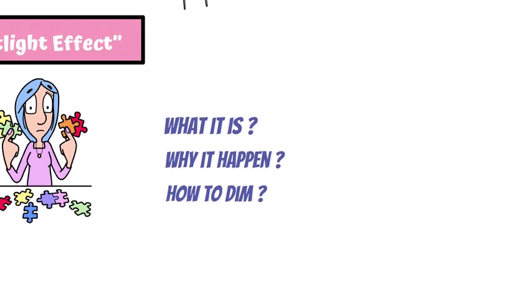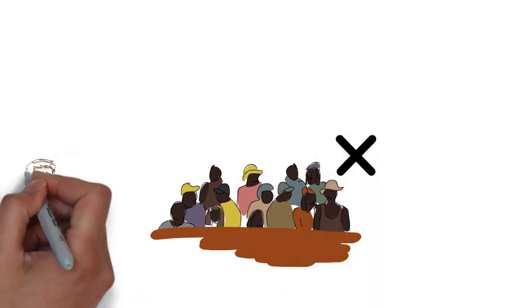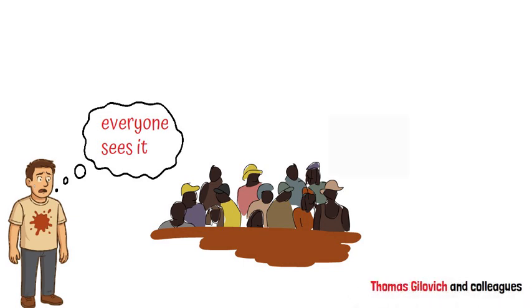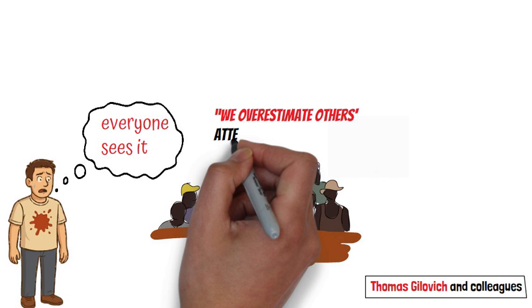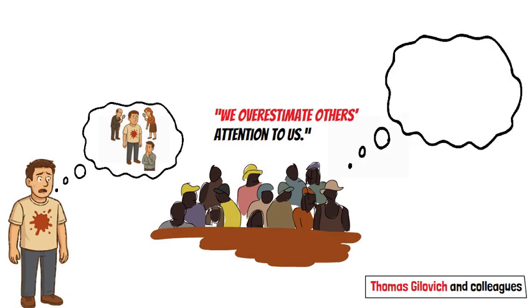Let's draw it out. The Spotlight Effect is our tendency to overestimate how much other people notice and care about our appearance, actions, or slip-ups. Coined by psychologists Thomas Gilovich and colleagues, it's rooted in egocentrism. We anchor on our own perspective, assuming others are as fixated on us as we are. In reality, people are too wrapped up in their own spotlights to scrutinize yours.